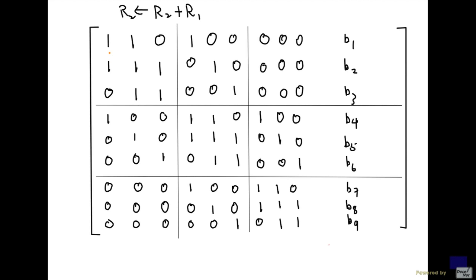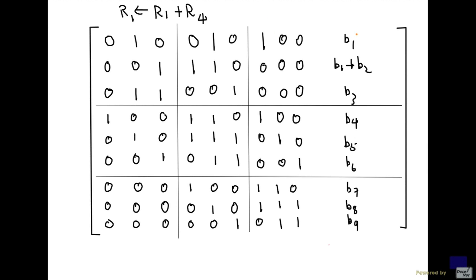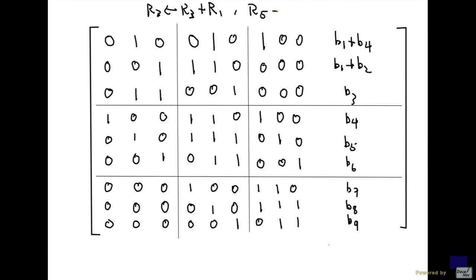Adding row 1 to row 2 gives 0, 0, 1, and b1 plus b2 on the right-hand side. The next operation is to replace row 1 with row 1 plus row 4, giving 0, 0, 1, 1, and b1 plus b4 on the right. Then I'm going to replace row 3 with row 3 plus row 1, and replace row 5 with row 5 plus row 1.